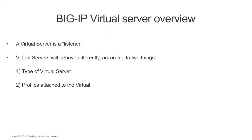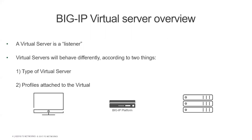A virtual server will always behave differently according to two things: one, the type of virtual server, and two, the profiles attached to the virtual server. A small example here — traffic arrives at the BIG-IP, we're going to send it somewhere. There are a bunch of profiles that you can have on the BIG-IP that will differentiate what we'll do with the traffic.